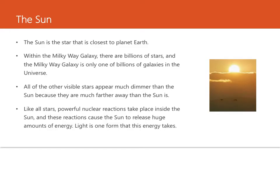The sun is the star that is closest to the planet Earth — that's why it looks so big to us. It is only one of the many stars in the universe. Within the Milky Way galaxy there are billions of stars, and the Milky Way galaxy is only one of billions of galaxies in the universe. All other visible stars appear much dimmer than the sun because they are much farther away.